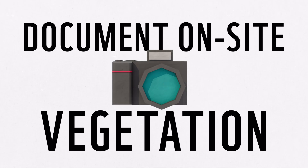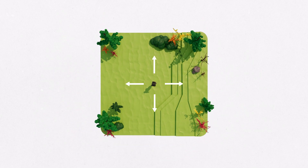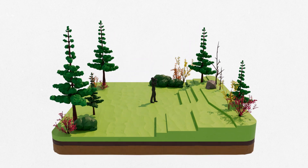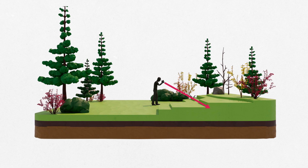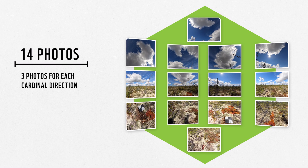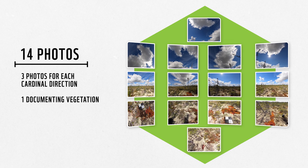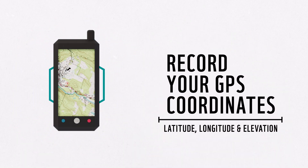Once you've arrived at your site, you will need to document the vegetation using a standardized photo series protocol. Start by documenting vegetation and canopy cover by taking two photos of the site — one pointing straight down and one pointing straight up. From the same spot, turn to each cardinal direction and take three photos: one parallel with the ground, one angled 45 degrees up, and one angled 45 degrees down. Once finished, you will have 14 photos of your site — three photos for each cardinal direction, one documenting vegetation, and one documenting canopy cover. Be sure to record the latitude, longitude, and elevation of your site with a GPS and write these measurements in your notebook.